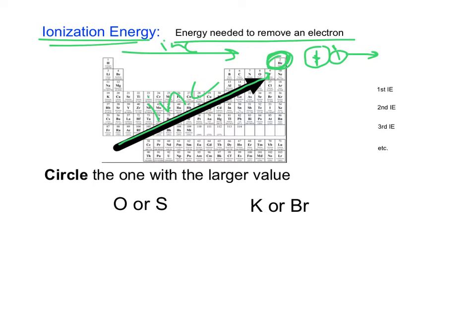That's going to be true for all the noble gases — they already have their eight valence electrons, so they are going to hold tightly onto those electrons.